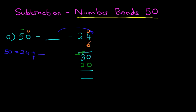And if we put the equal sign, 30 plus 20 is 50. So we've reached our target of 50. What numbers did we have to add to 24 to get to 50?